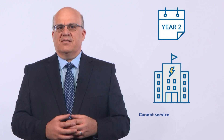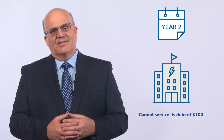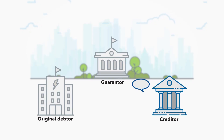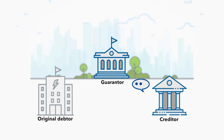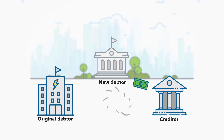A year later, the state-owned enterprise is in financial distress and cannot service its debt of $100. The local bank calls the guarantee and the central government, as guarantor, becomes the new debtor. The debtor-creditor relationship between the state-owned enterprise and the local bank is now terminated.